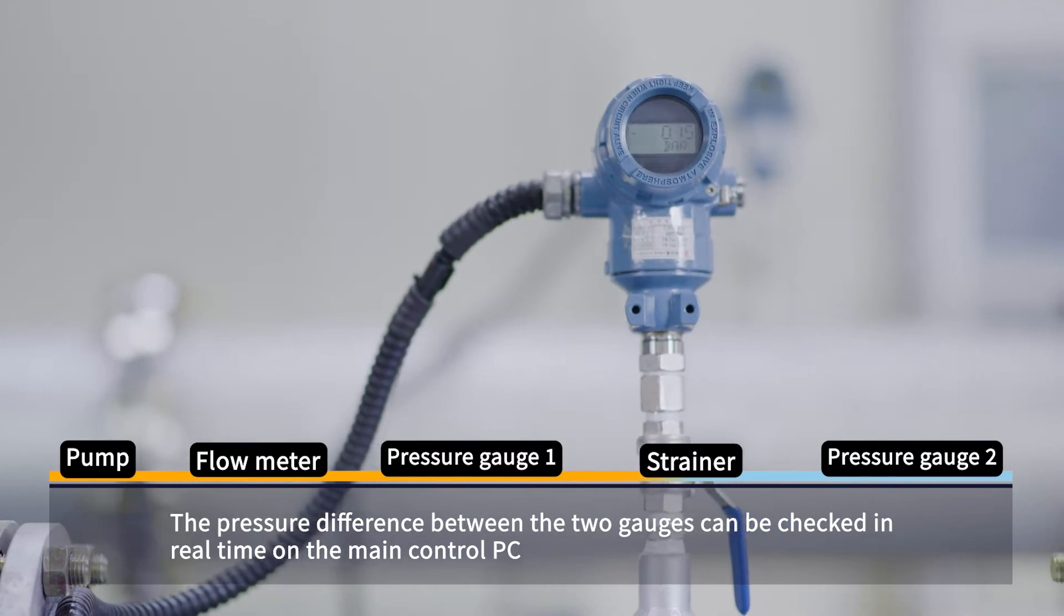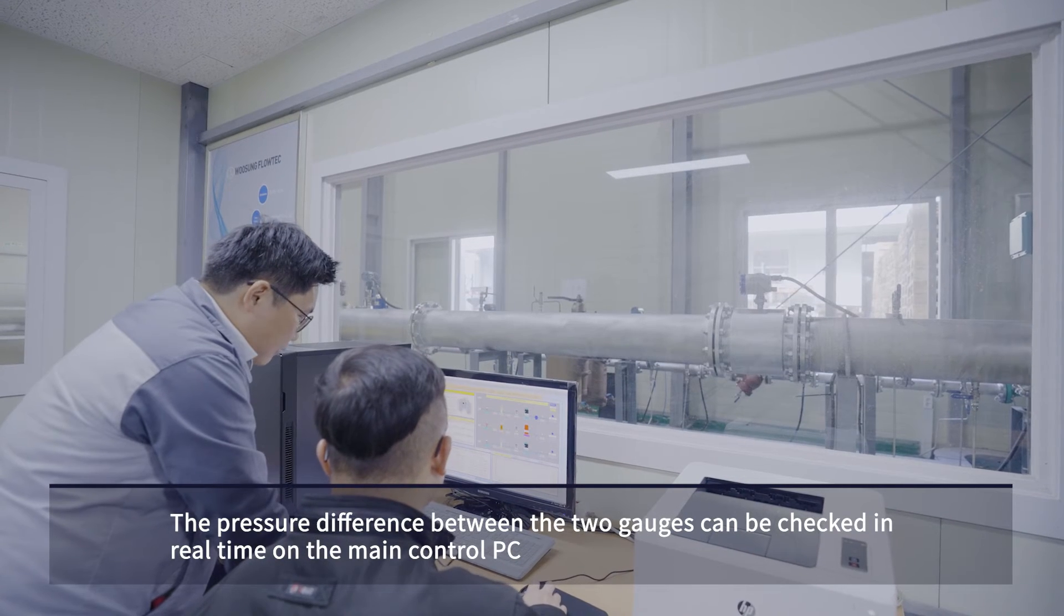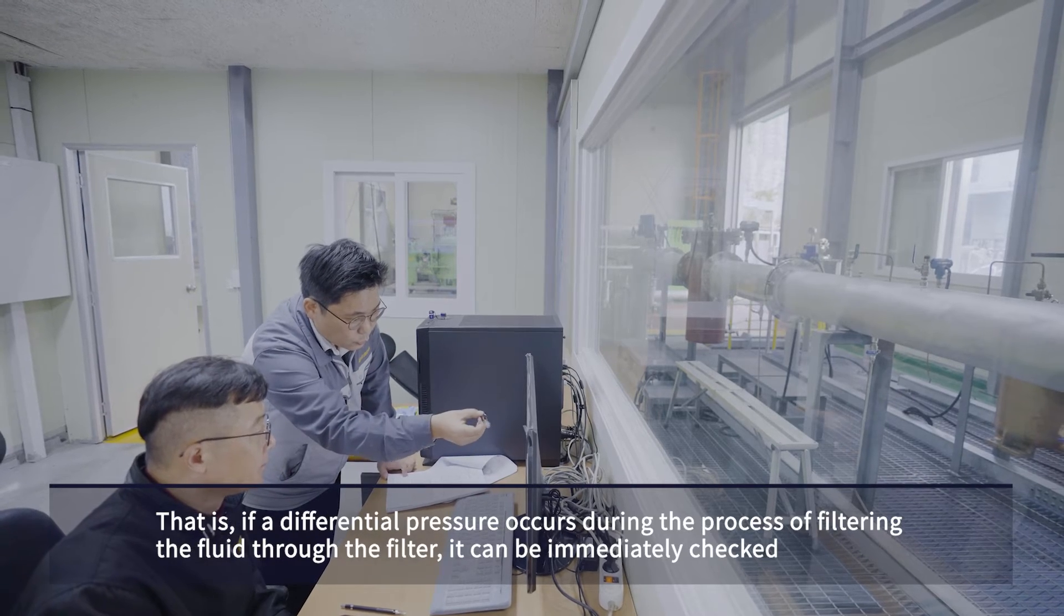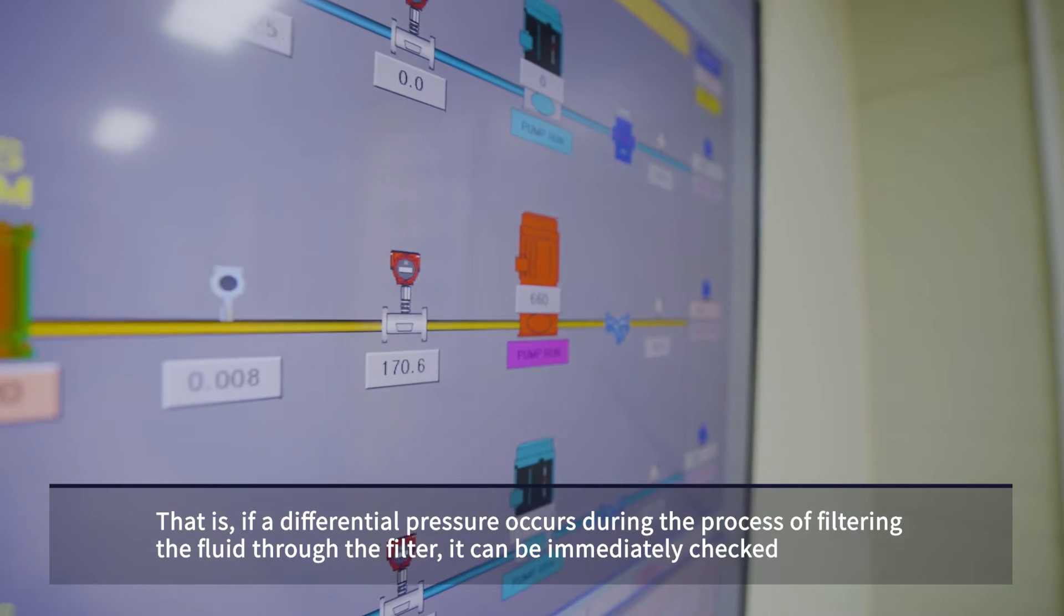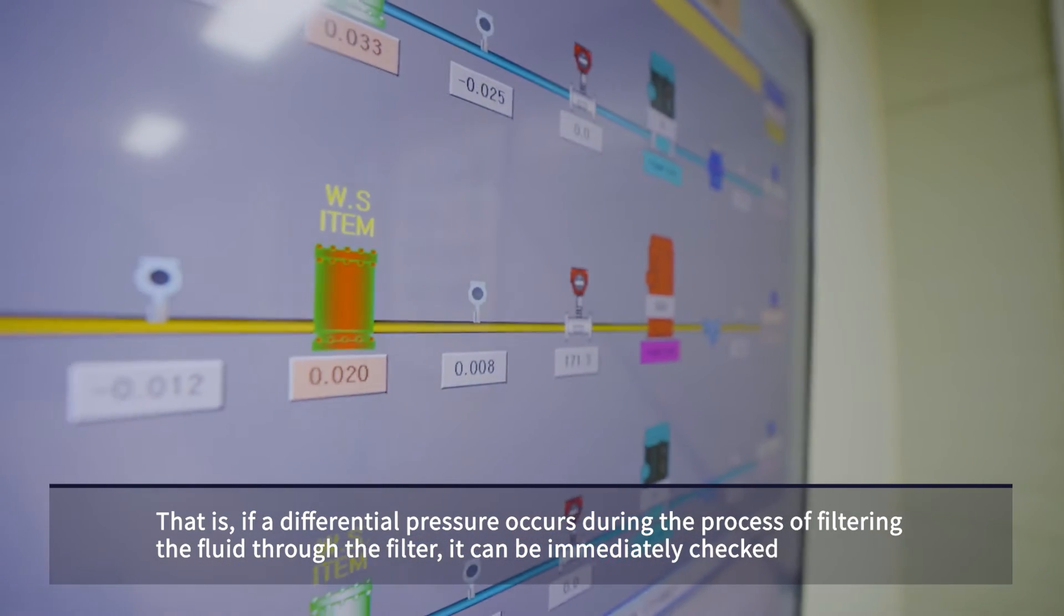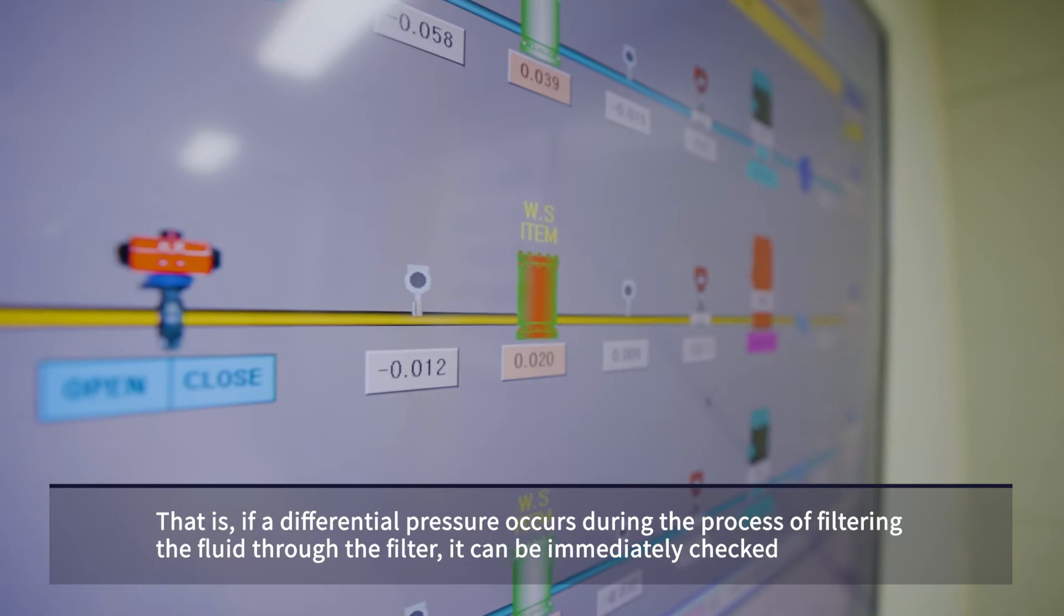The pressure difference between the two gauges can be checked in real time on the main control PC. That is, if a differential pressure occurs during the process of filtering the fluid through the filter, it can be immediately checked.